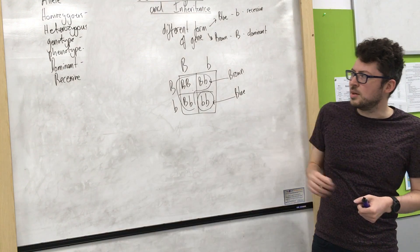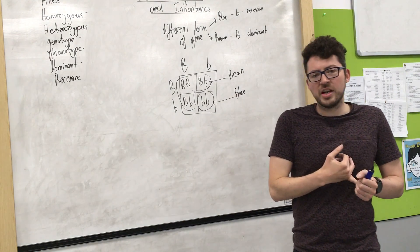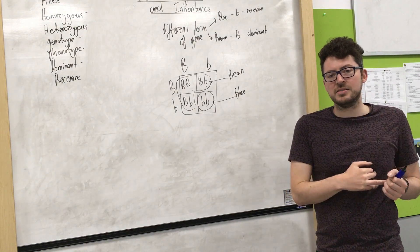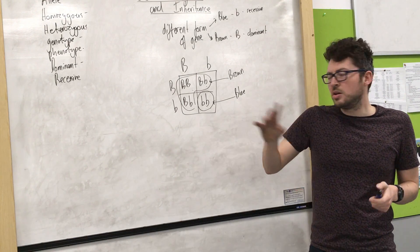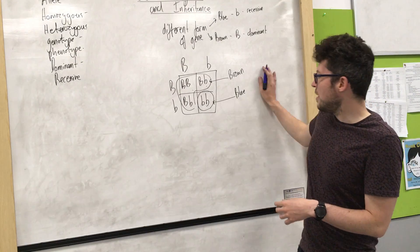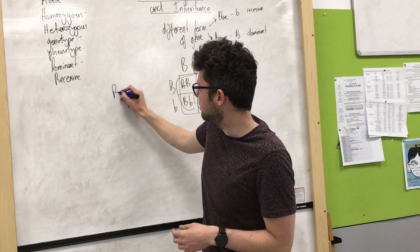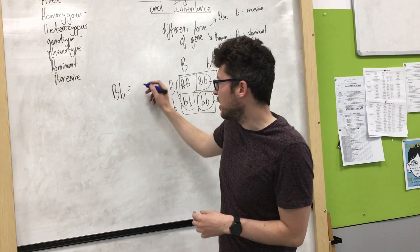Now two of the terms we need to know are heterozygous and homozygous. Now heterozygous just means that your genes are different because hetero means different. So for example big B little b is heterozygous.